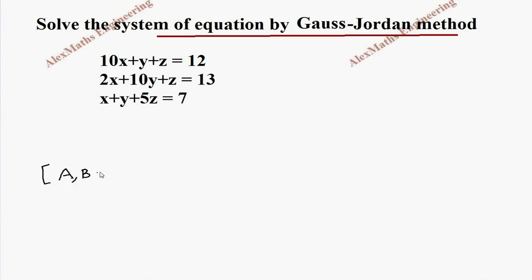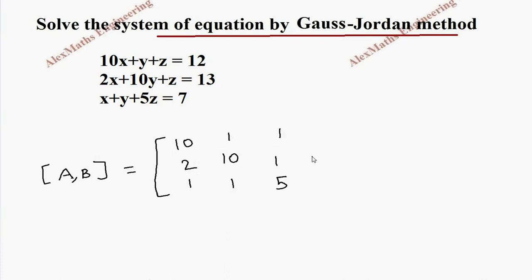This augmented matrix [A|B] will have the first column as all the coefficients of x, which is 1, 0, 2. The second column is coefficients of y: 1, 10, 1. The third column is coefficients of z: 1, 1, 5. The last column has all the constants: 12, 13, and 7.